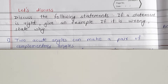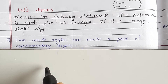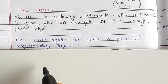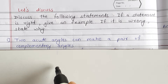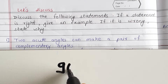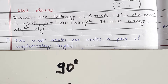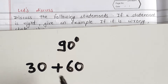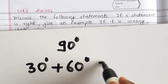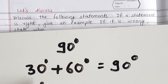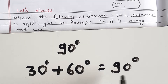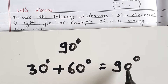Two acute angles can make a pair of complementary angles. Complementary angles mean two angles summing to 90 degrees. For example, one acute angle of 30 degrees and another acute angle of 60 degrees — two acute angles summing to 90 degrees means two acute angles can make a pair of complementary angles.